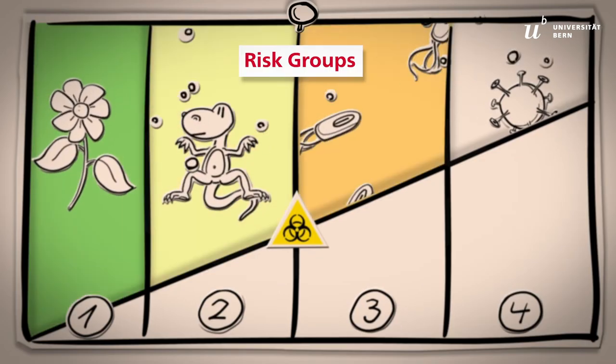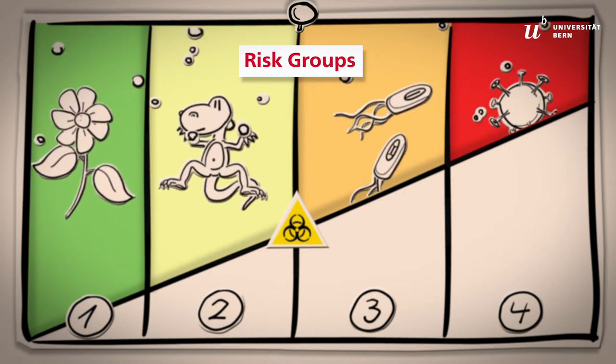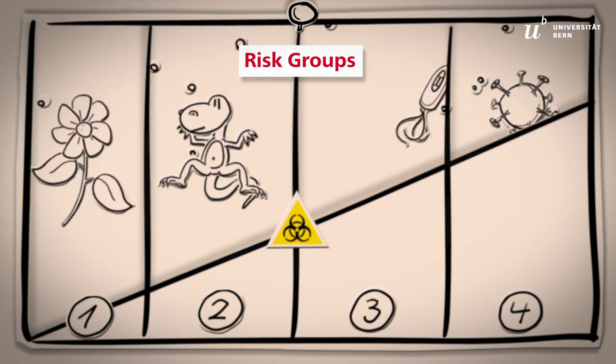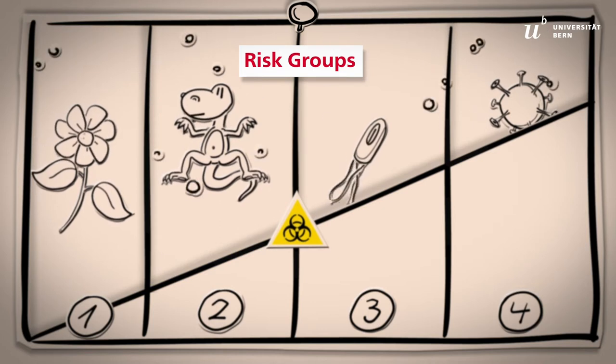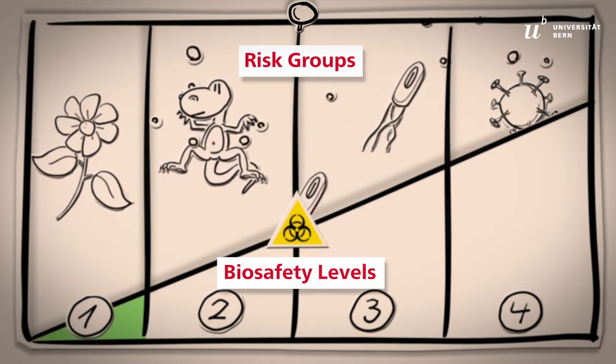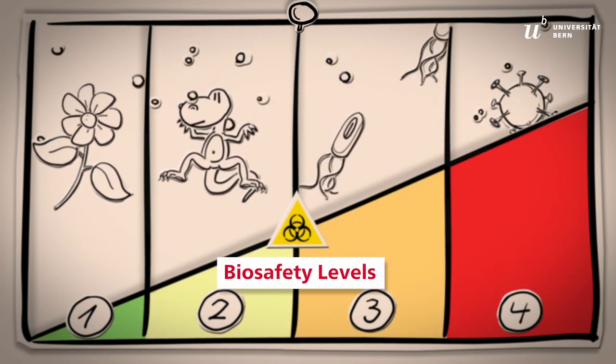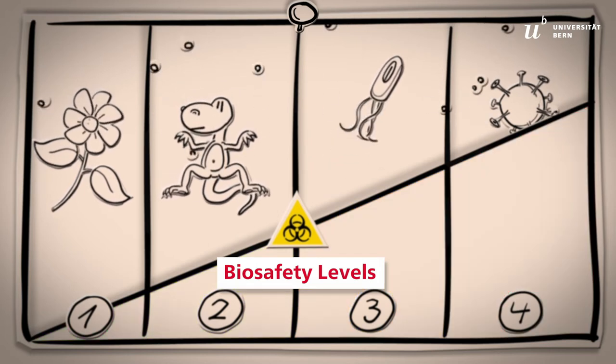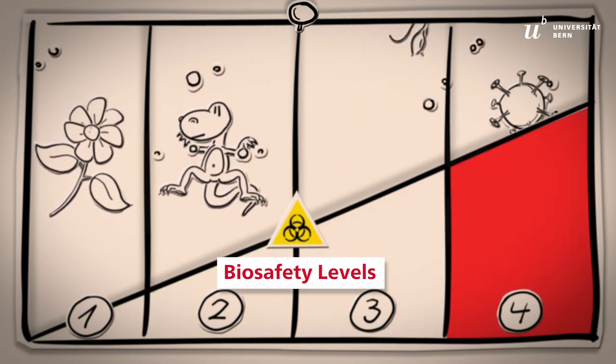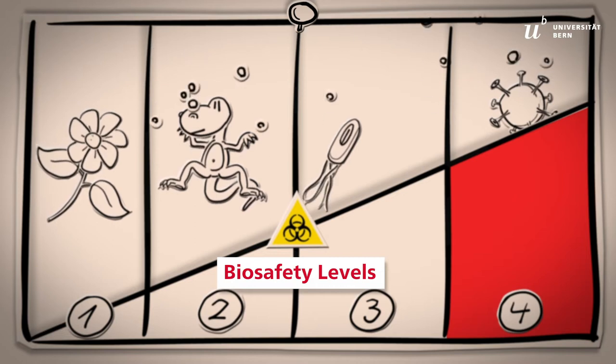Organisms are assigned to one of four risk groups based on their characteristics. A risk assessment of activities with these organisms determines the biosafety level for the laboratory. Biosafety level 4 requires the highest containment standards and safety measures.